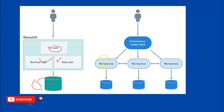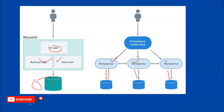In microservices, a UI, mobile client, or any other client interacts with microservices. Each microservice has its own autonomous functionality and works with its own database. In microservices, we segregate and differentiate the modules and functionality and create separate services. Let's go to the programming session.